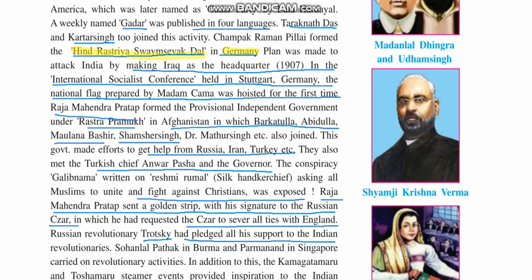Sohanlal Pathak in Burma and Parmanand in Singapore carried out revolutionary activities in the southern part of Asia. In addition to this, the Komagata Maru and Toshimaru steamer incidents provided great inspiration to the Indian revolutionaries living in foreign countries.